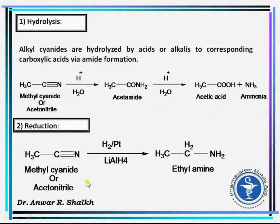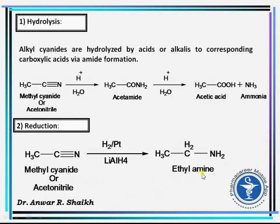Reduction: upon reduction in the presence of platinum and hydrogen, or lithium aluminum hydride as a reducing agent, alkyl cyanide forms primary amines. For example, methyl cyanide forms ethylamine.